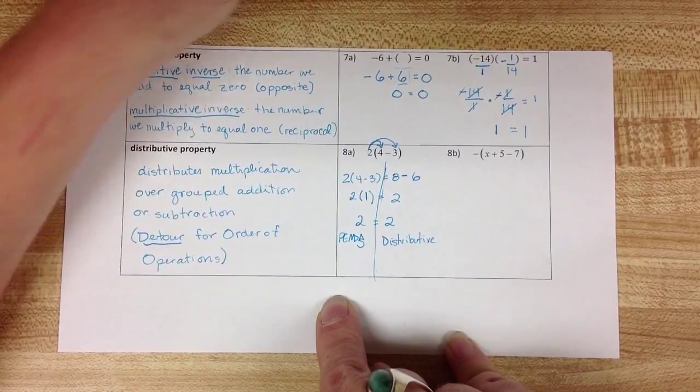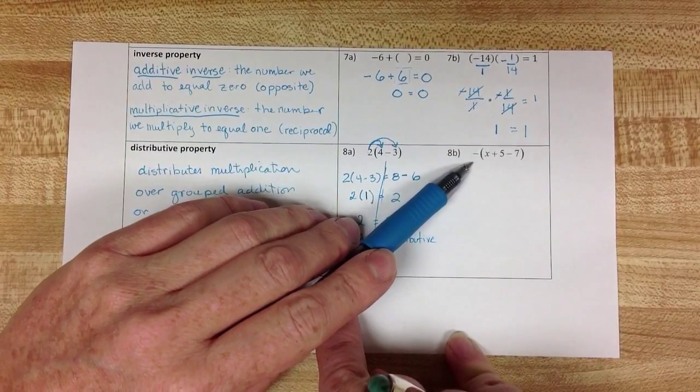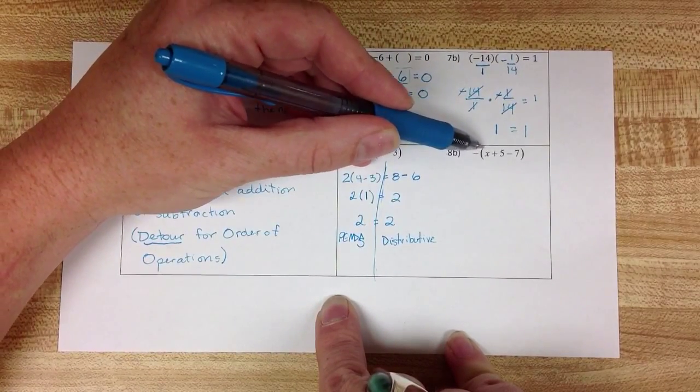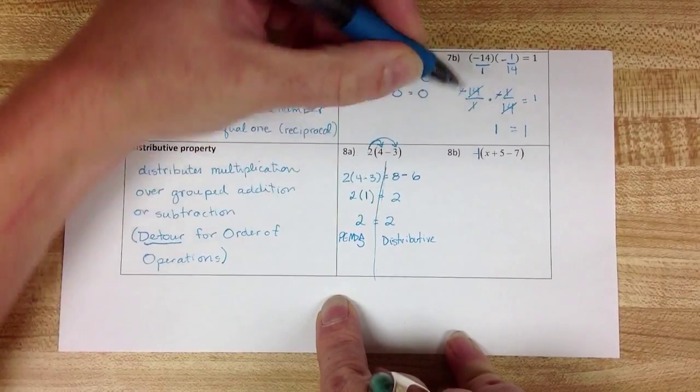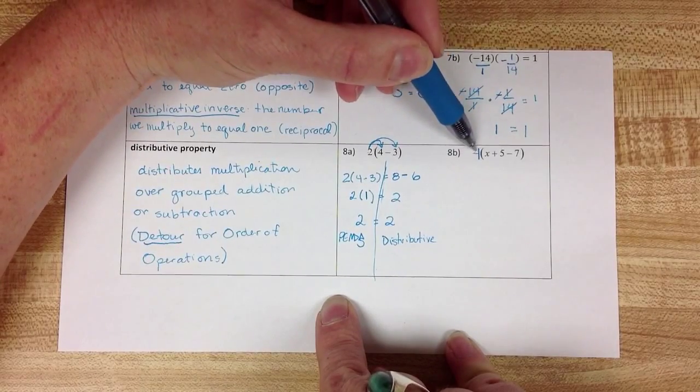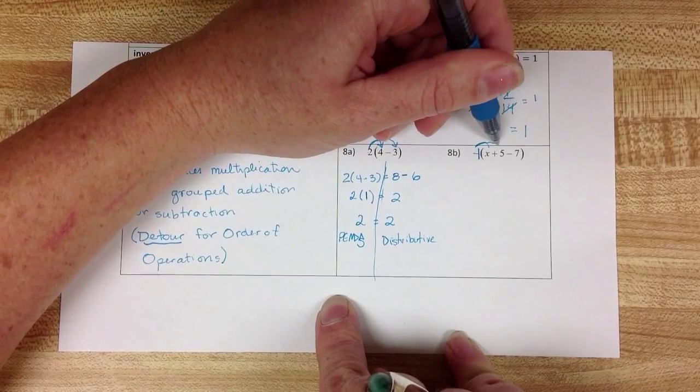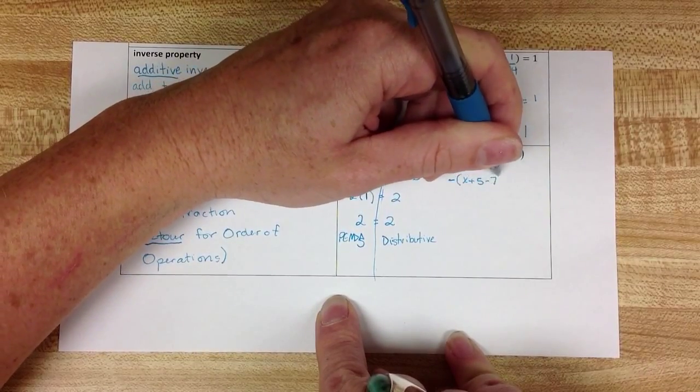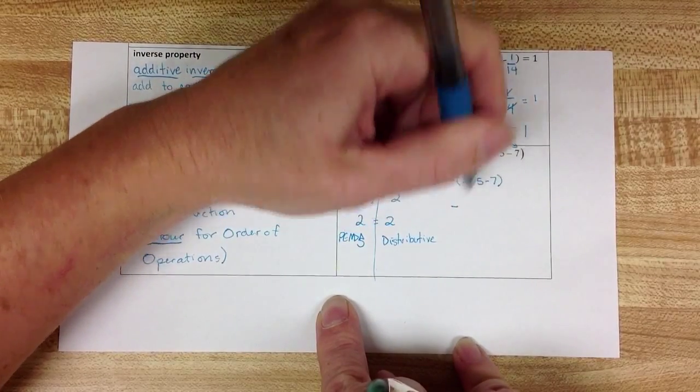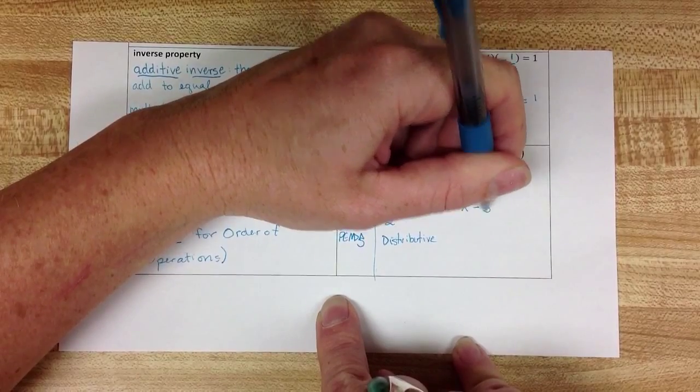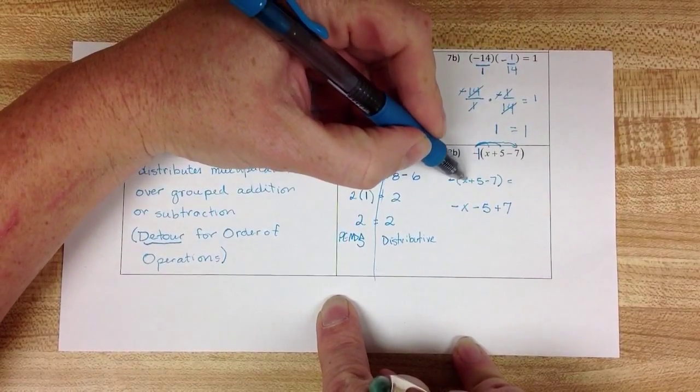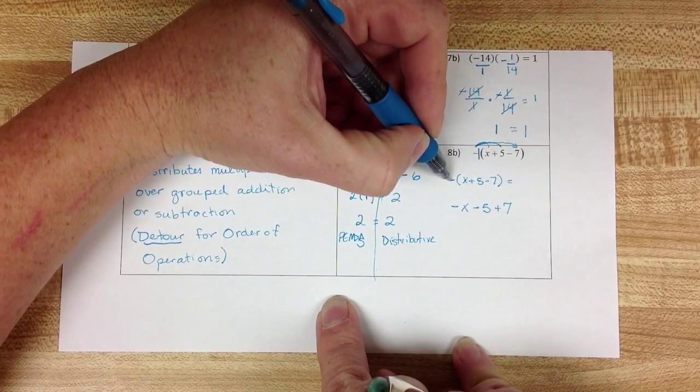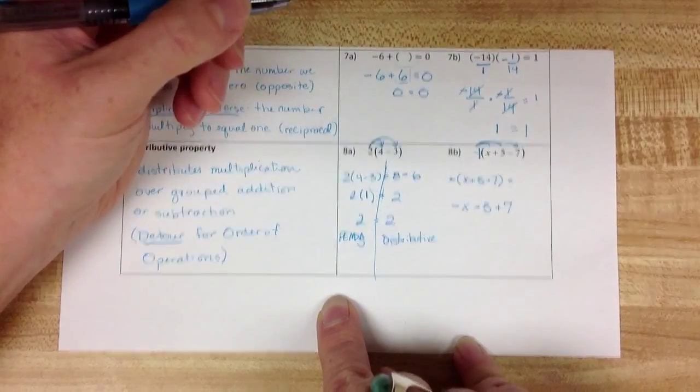This was one where there's an X on the inside. And I chose this problem as our example because it looks like there's nothing to distribute on the outside. But I wanted to get at the idea that any time you see a negative sign outside of a grouping symbol, it means that negative is really a negative 1 that needs to get distributed or multiplied by all of the terms on the inside. So negative X plus 5 minus 7 is the same thing as negative X minus 5 plus 7. Because this negative makes that X into a negative X. This negative makes that positive 5 negative. And when we multiply a negative times a negative, it turns back into a positive 7.